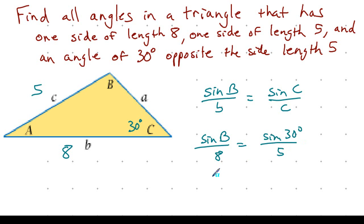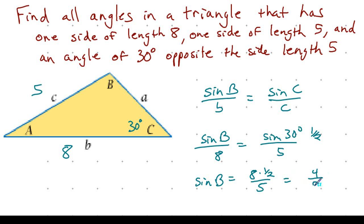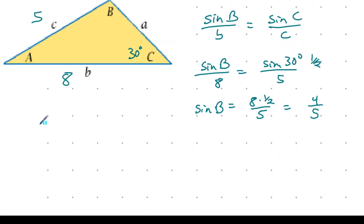Knowing that sine of 30 equals one half, multiplying both sides by 8 gives 8 times one half over 5, so sine of B equals 4 over 5. Finding the arc sine of 4 fifths in degrees gives an angle of approximately 53 degrees.